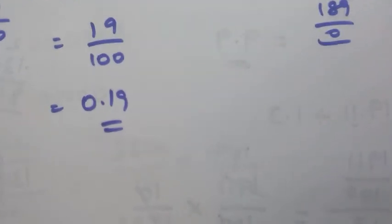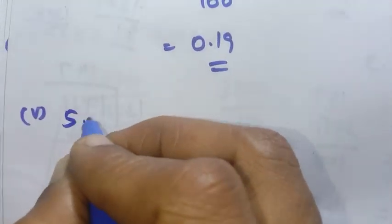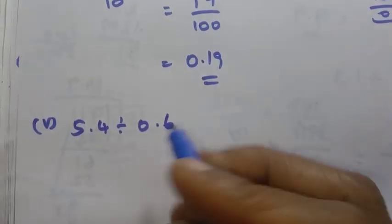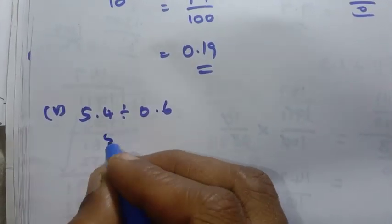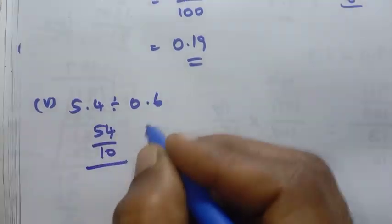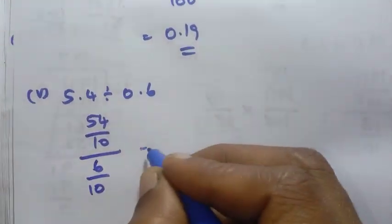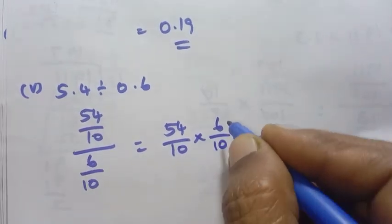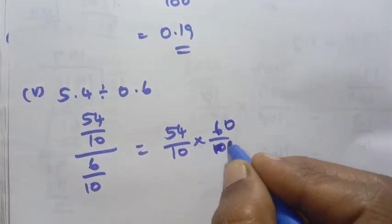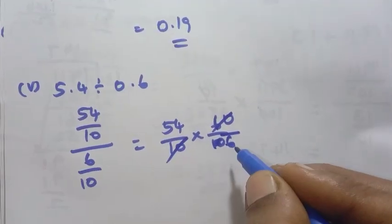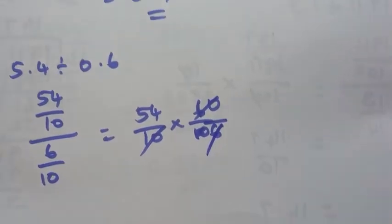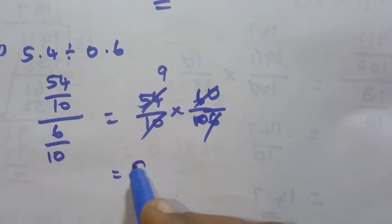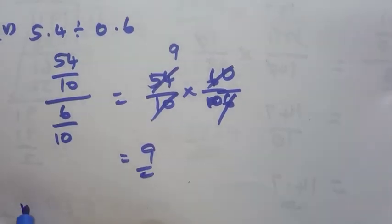Fifth sum: 5.4 divided by 0.6. Both have 1 decimal place. 5.4 is 54 by 10, divided by 6 by 10. So 54 by 10 into 10 by 6 — the 10s cancel, giving 54 by 6. 54 divided by 6 equals 9. The answer is 9.